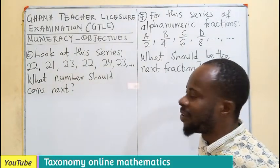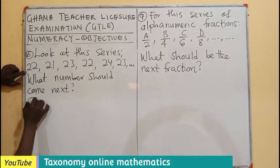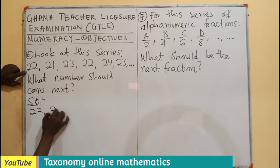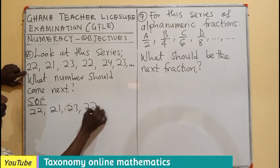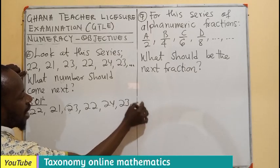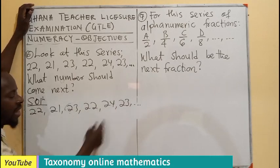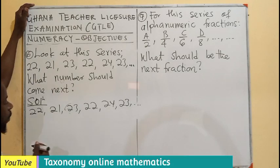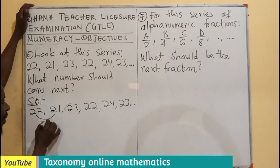Question 6. Look at this series: 22, 21, 23, 22, 24, 23. What number should come next after this? We have to look at the common differences or look at the pattern. So I can see between the first term and the second term, there is a reduction of 1.